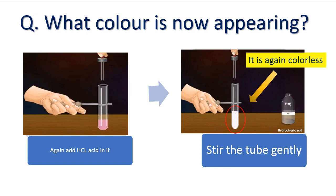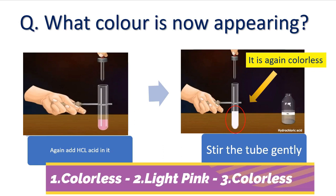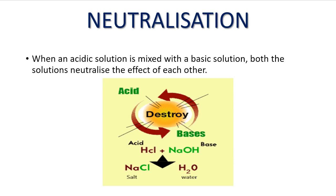So what have we observed during this experiment? When we add acidic solution to phenolphthalein, no color appears. But when we add basic solution into the acidic and phenolphthalein solution, a light pink color appears. And when we again add HCl acid, the color disappears. Can you guess why the pink color is disappearing and reappearing?